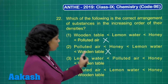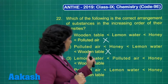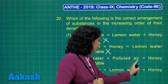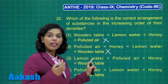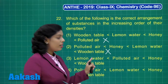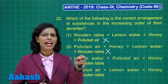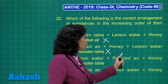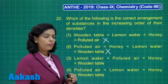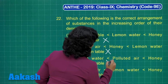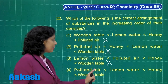Looking further: lemon water is a liquid, and polluted air is in the gaseous state of matter. Definitely lemon water has more density than polluted air. The density of polluted air cannot be more than the density of lemon water, so that option is also marked with a cross.